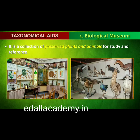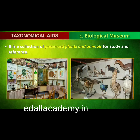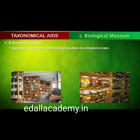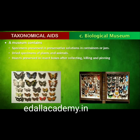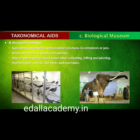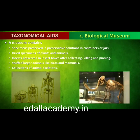Biological museums are generally set up in educational institutes such as schools and colleges. Museums have collections of preserved plant and animal specimens for study and reference. Specimens are preserved in containers or jars in preservative solutions. Plant and animal specimens may also be preserved as dry specimens. Insects are preserved in insect boxes after collecting, killing and pinning. Larger animals like birds and mammals are usually stuffed and preserved. Museums often have collections of skeletons of animals too.